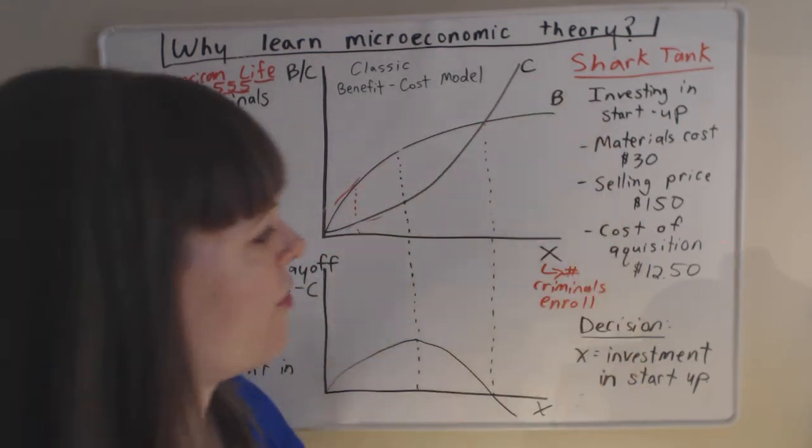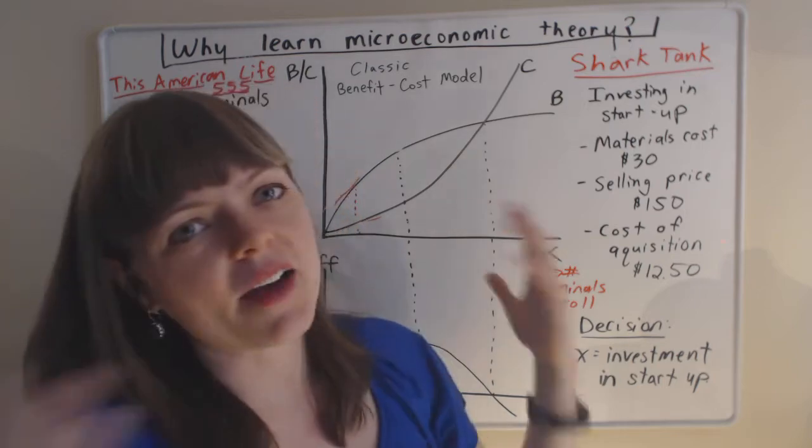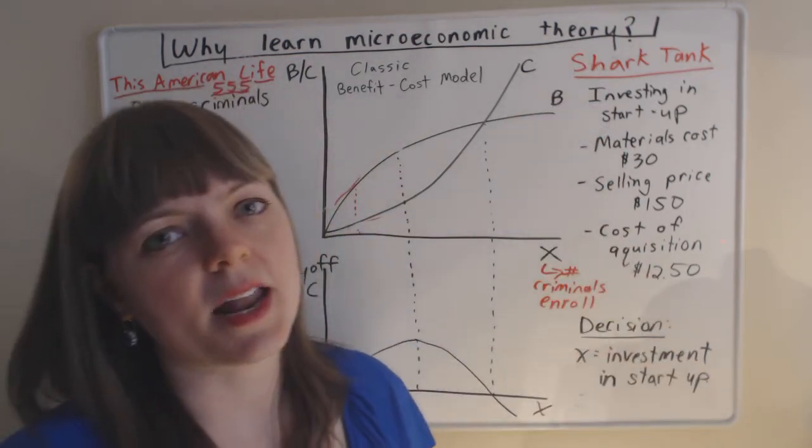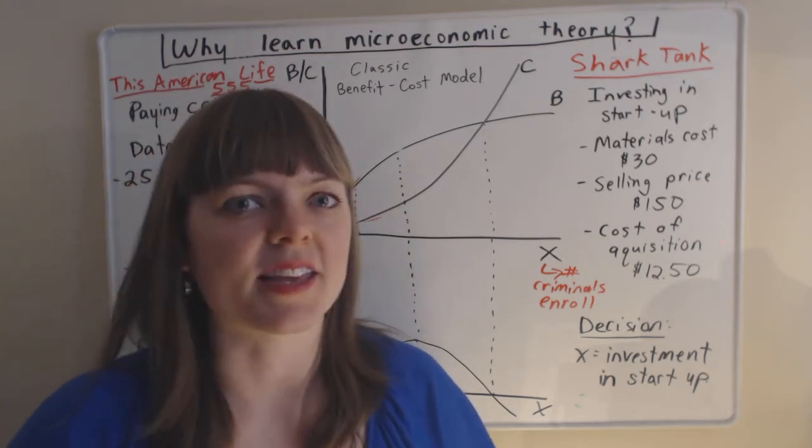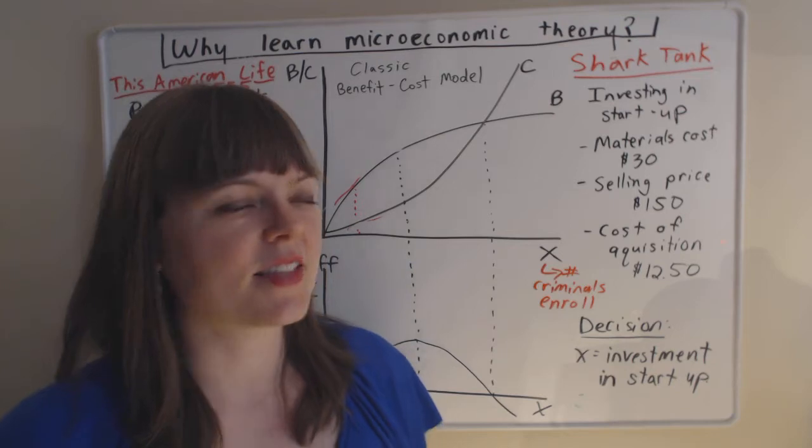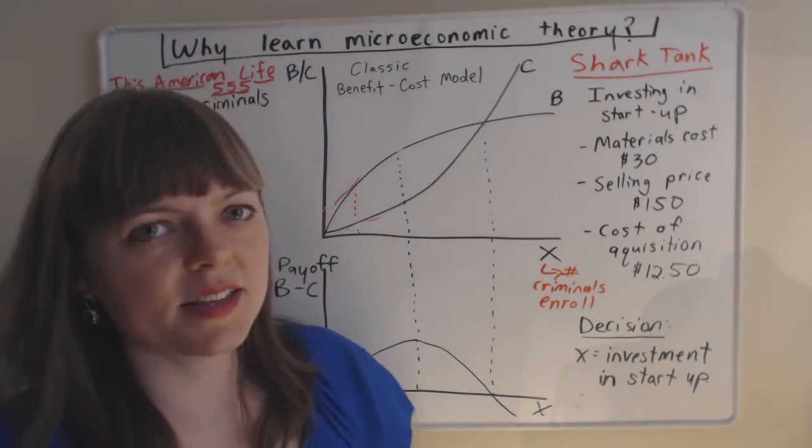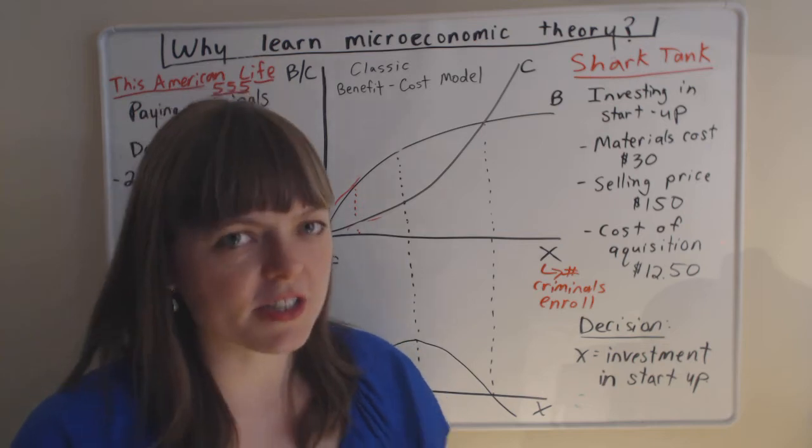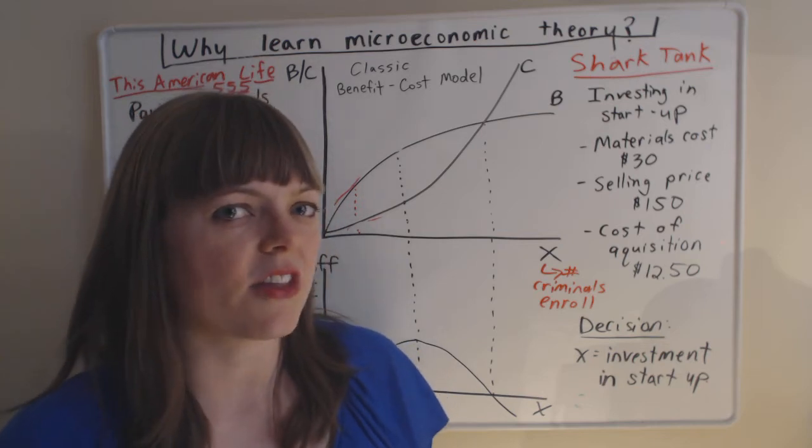Example number two is very similar. It's from Shark Tank. And I mean, I have an episode in mind, but I'm not even going to say it. Because this basic setup applies to many, many Shark Tank episodes. In Shark Tank, you have these startup companies. And the companies, they have this great idea for a product. They're starting to produce the product. They have some data on the product.